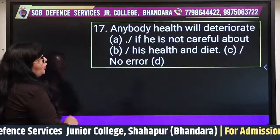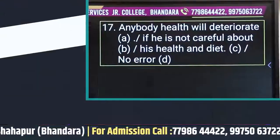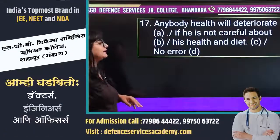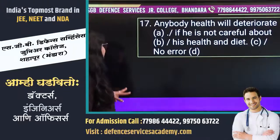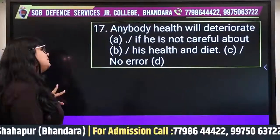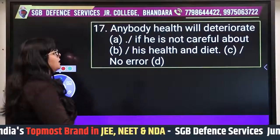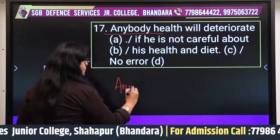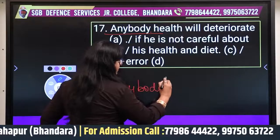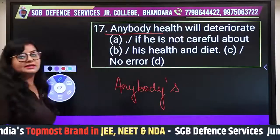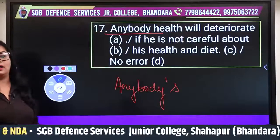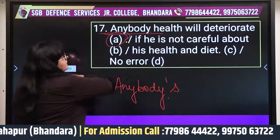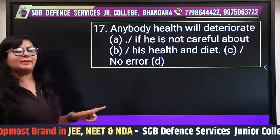Question seventeen: 'Anybody health will deteriorate if he is not careful about his health and diet.' Deteriorate means to become worse — health getting worse. The error is in part A: 'anybody health' should be 'anybody's health' — apostrophe-S is needed.